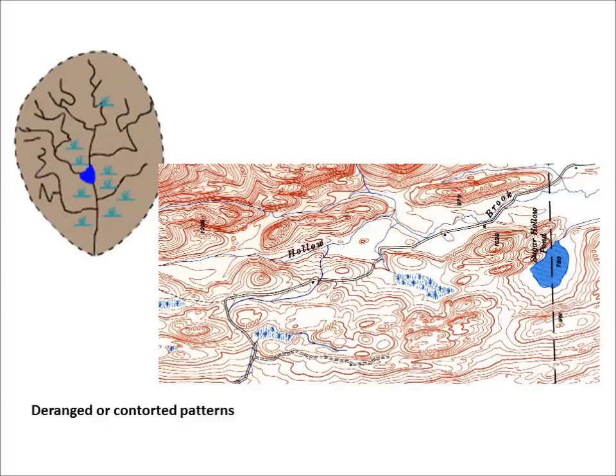We have the deranged and contorted patterns. These develop from the disruption of pre-existing drainage patterns. Here we see a dendritic pattern that was altered and then overrun by a glacier. The glacier left behind fine-grained material that forms wetlands and deposits that dam streams to impound small lakes. The tributary streams appear significantly more contorted than they were prior to glaciation, partly because the deposited material has altered the topography of the landscape, which also alters water flow patterns.